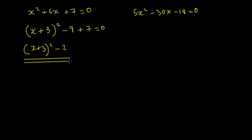Let's look at the next one here. So if we look at this one, we have to take out the common factor of 5 first of all, so that we're left here with our x squared minus 6x minus 18. So now we can go ahead and we can complete the square.